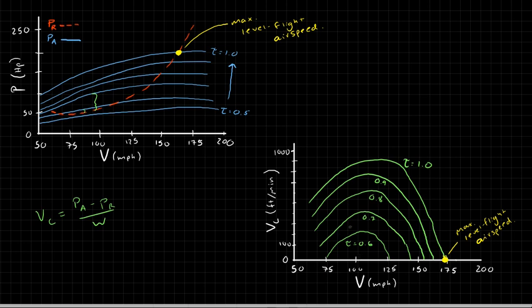In reality, the lower of these two airspeeds is generally below the stall limit. For this aircraft, let's say the stall limit is right here — so there would really be only one airspeed at which you can obtain level flight without stalling.